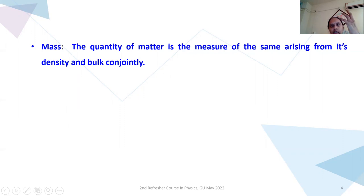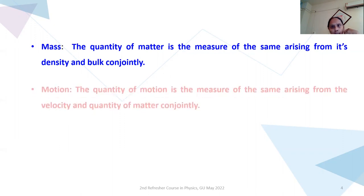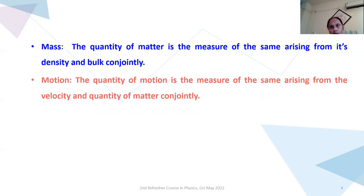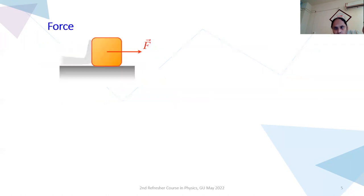Mass is the quantity of matter which is the measure of same arising from its density and bulk jointly. The quantity of motion is the measure of the same arising from the velocity and quantity of matter jointly. Let us see force.